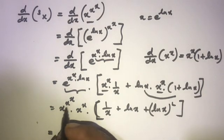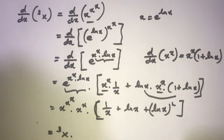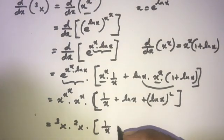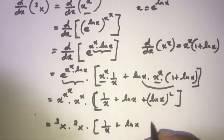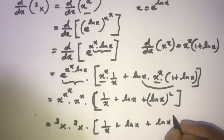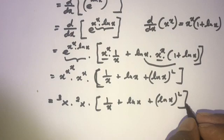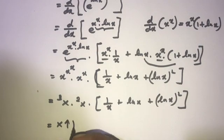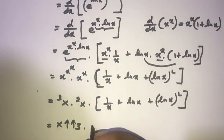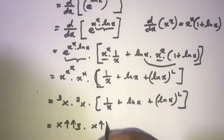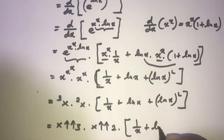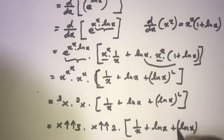Combining everything: x to the x to the x times x to the x, times 1 over x plus ln x plus ln x squared. In notation, this is x double up arrow 3 times x double up arrow 2 times (1 over x plus ln x plus ln x squared). This is the answer to the second question.